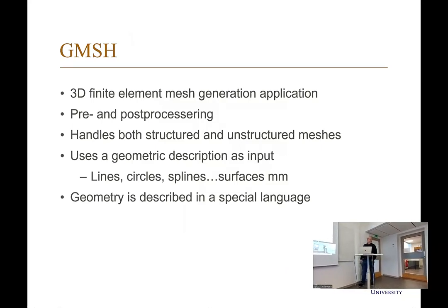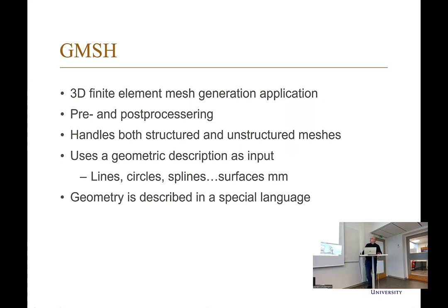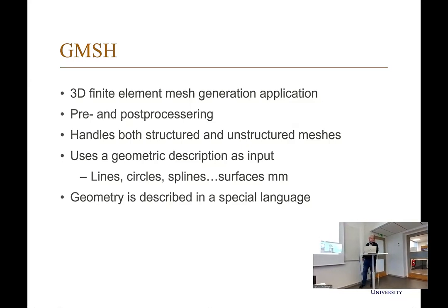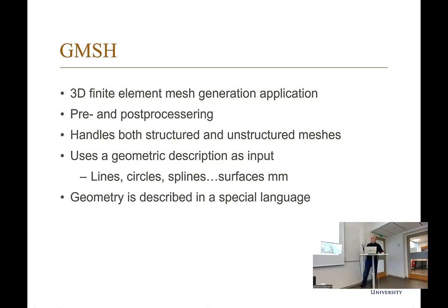In this course we will be using a mesh generator called GMSH, which is a general mesh generation application. It can generate meshes in 1D, 2D, and 3D, and it can generate both structured and unstructured meshes. It uses a geometric description as input—you define nodes, lines, circles, splines, and surfaces, combine them together to create a domain, and that geometry is then used to create the mesh. We have integrated GMSH into CarlFem, so you don't have to generate the special geometry description yourself; that is handled completely by CarlFem.